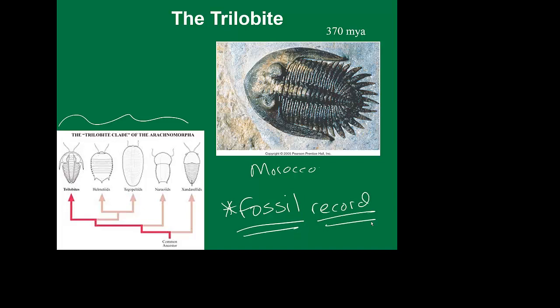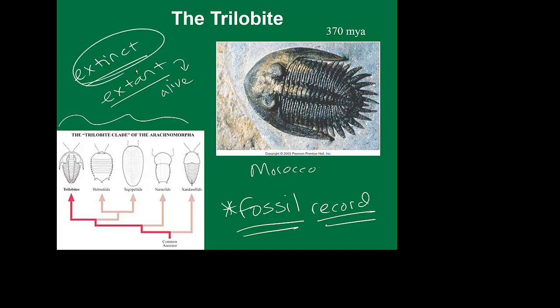There are no living species of trilobites. When we talk about trilobites, we talk about them as being extinct. We can also talk about extant species — an extant species is one that is still alive. But trilobites are all extinct, so we only have the fossil record to work with. This will be different for different species, but we can look at how they've changed simply by looking at the fossil record.